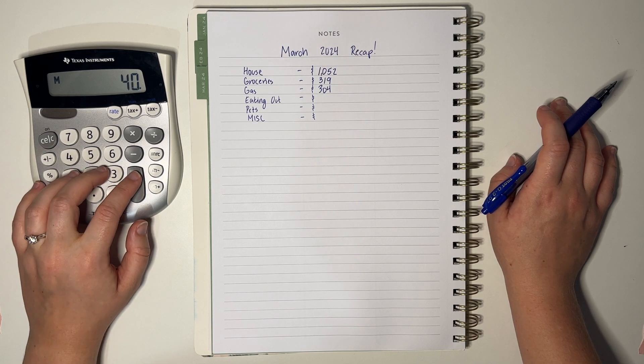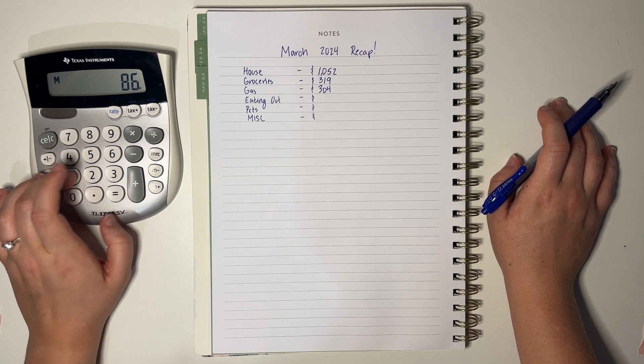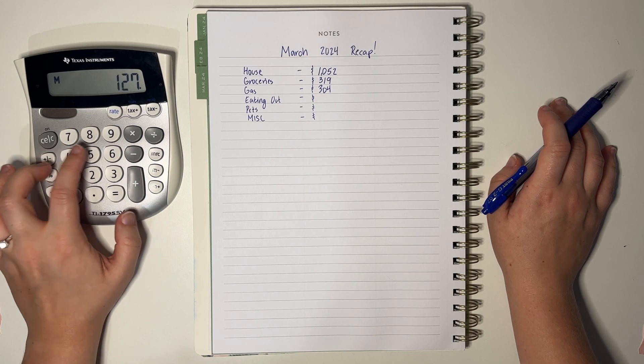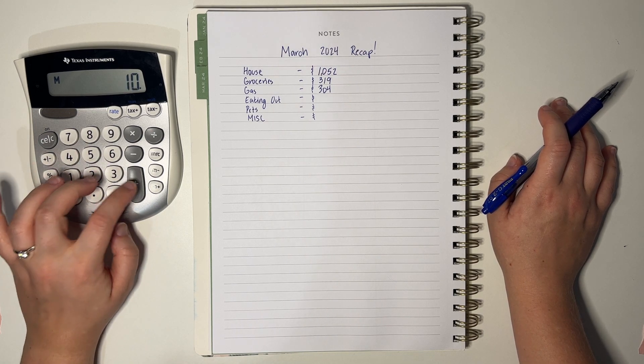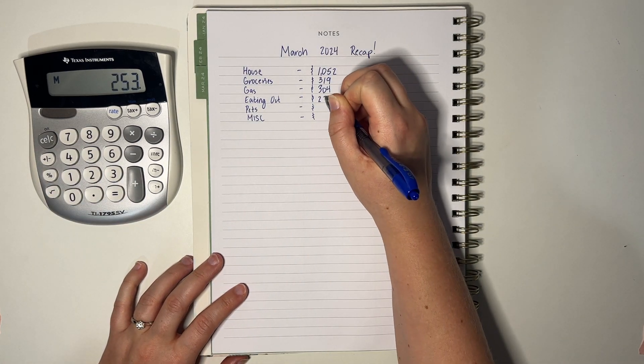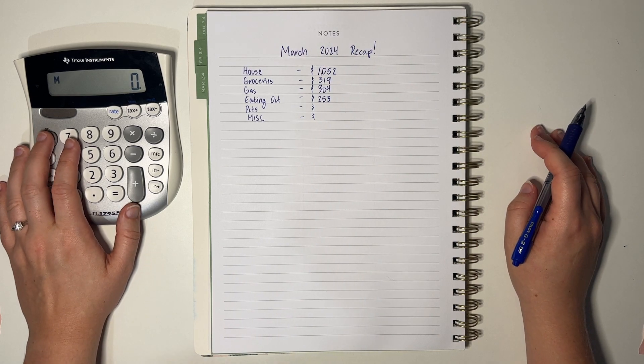Eating out 40, 46, 14, 11, 16, 50, 30, 10, 16, 20, 253. That is a lot of money. That's not great.